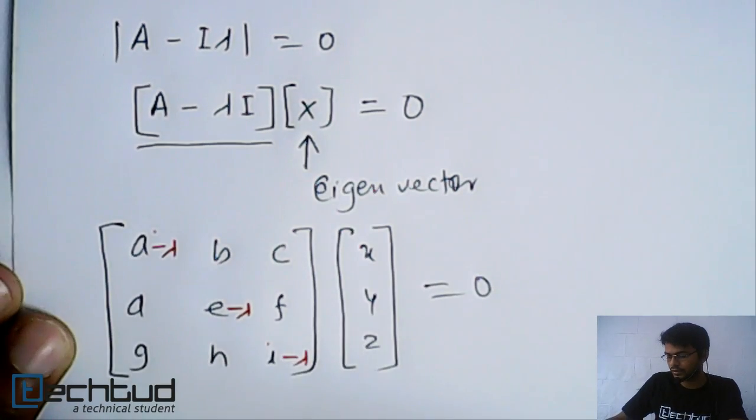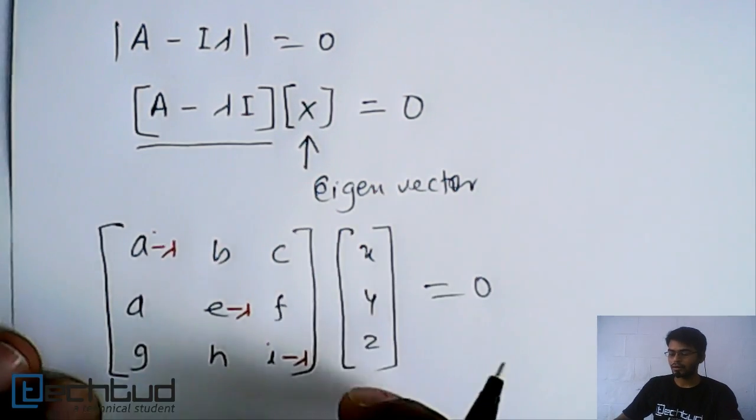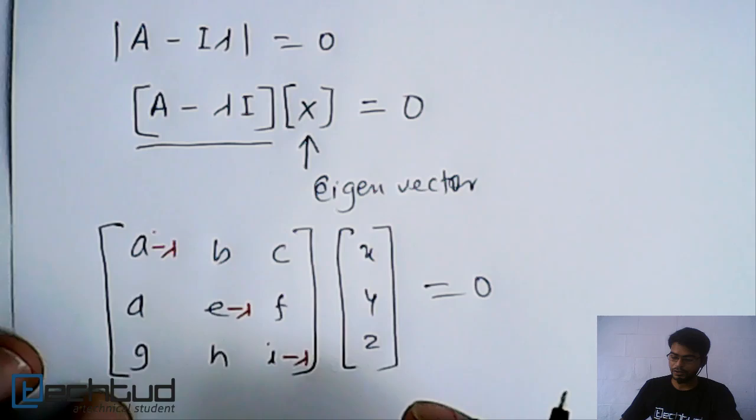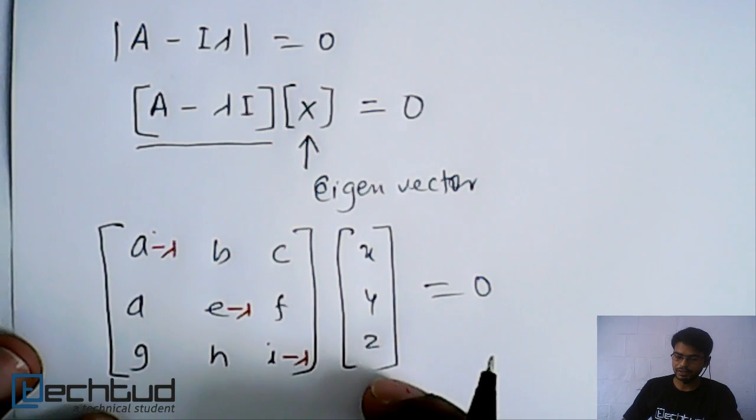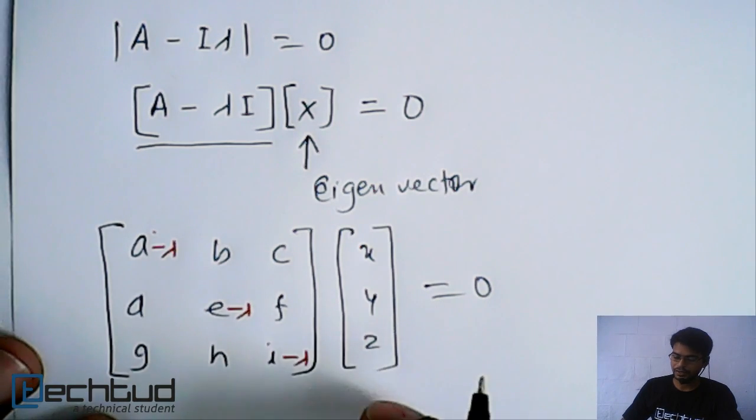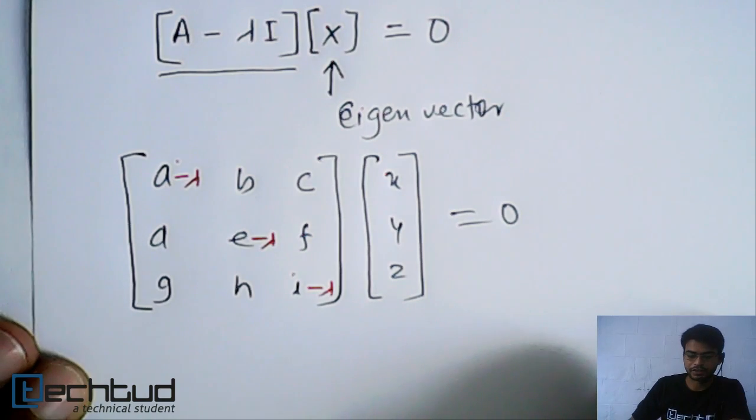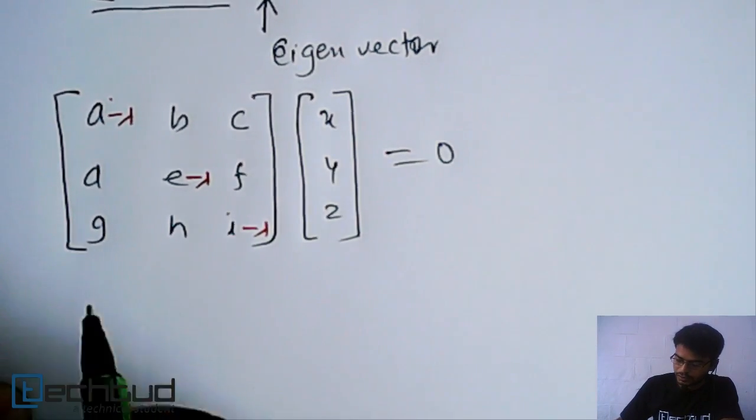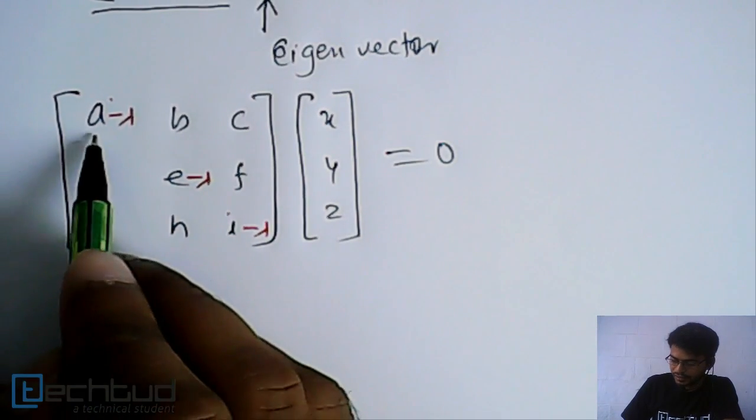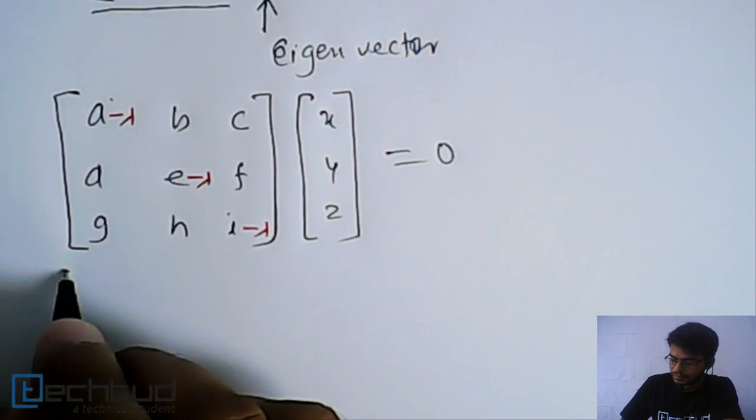Equate with zero. Now we will solve this, and whatever be the value of x, y, z, that will become our eigenvector.